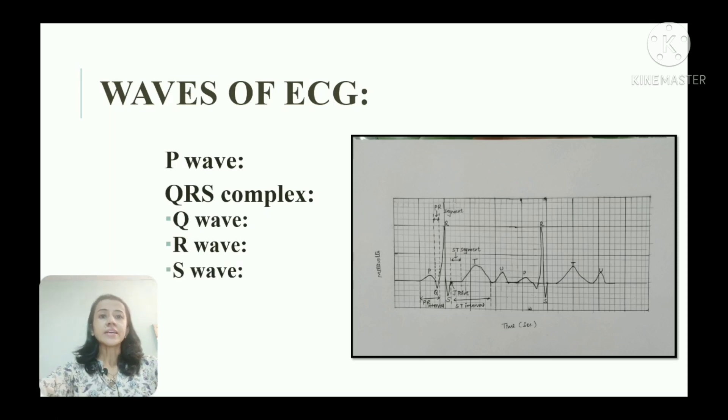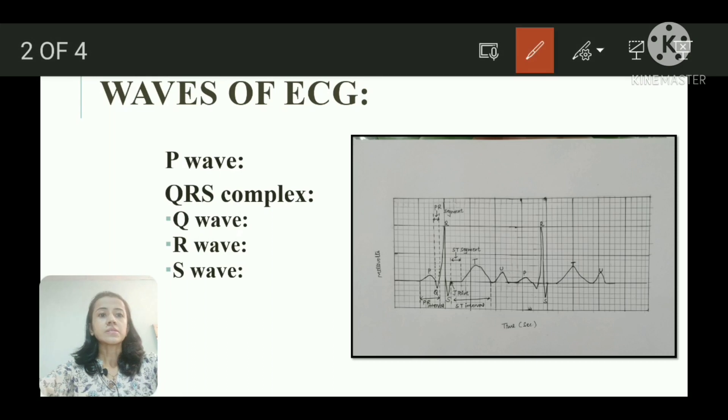Next is S wave, a negative deflection after R wave, and it represents excitation of more basal parts of the ventricle. You can see here this is Q wave small, R wave, and S wave.